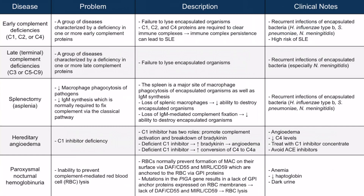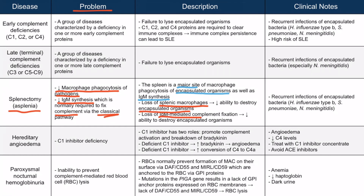Let's discuss the consequences of splenectomy. Without a spleen, there's decreased macrophage phagocytosis of pathogens. Secondly, there's decreased IgM synthesis, which is normally required to fix complement via the classical pathway. The spleen is necessary for clearing encapsulated organisms because it is a major site of macrophage phagocytosis and IgM synthesis. Without a spleen, patients lose splenic macrophages and experience a loss of IgM-mediated complement fixation, leading to decreased MAC formation and decreased ability to destroy encapsulated organisms.